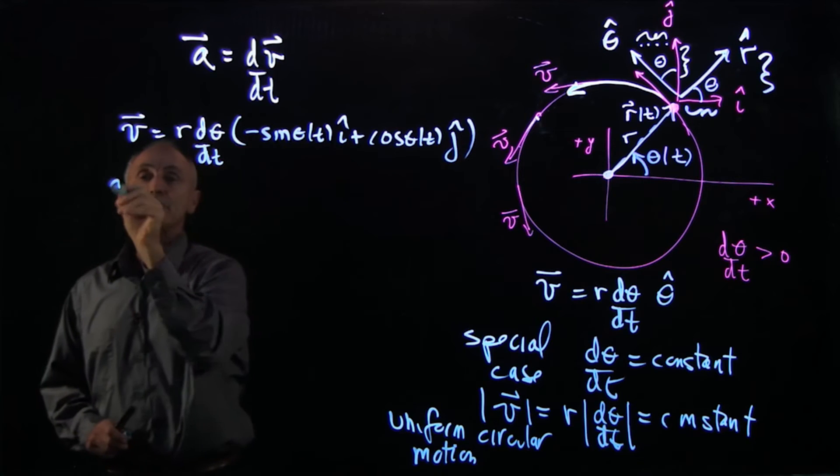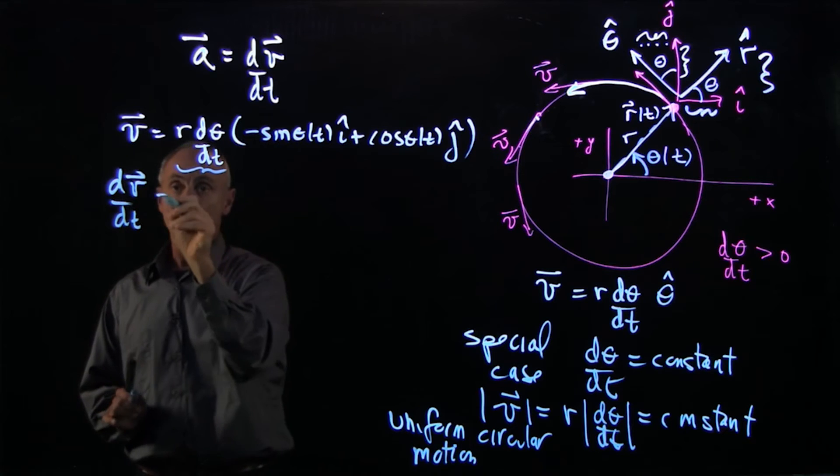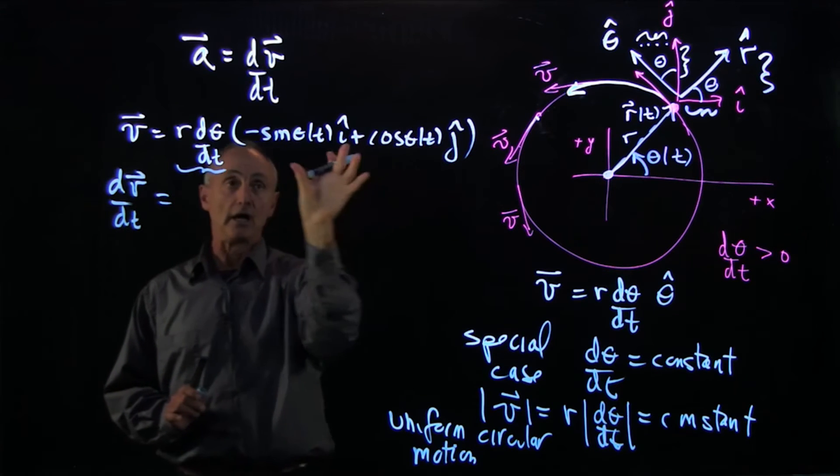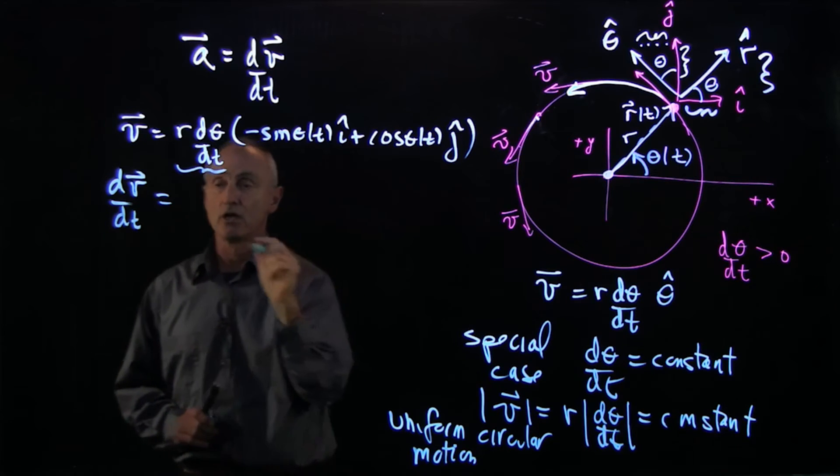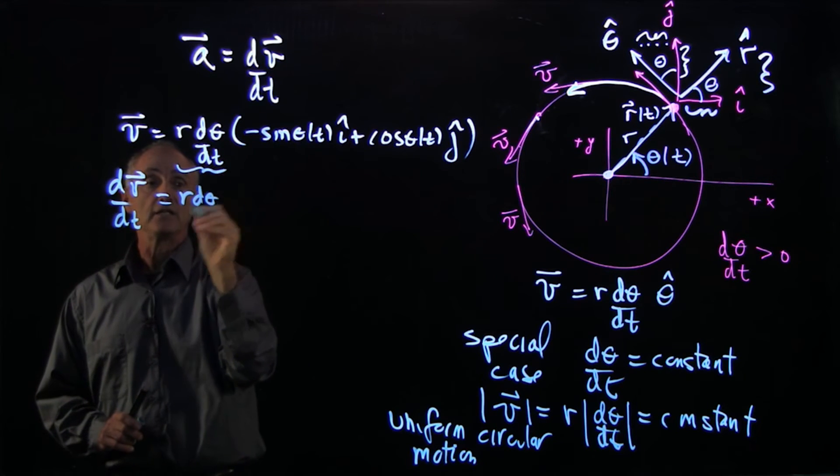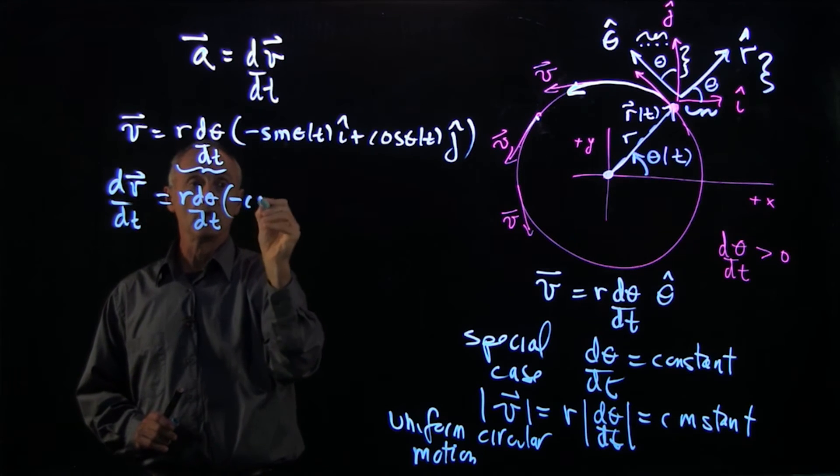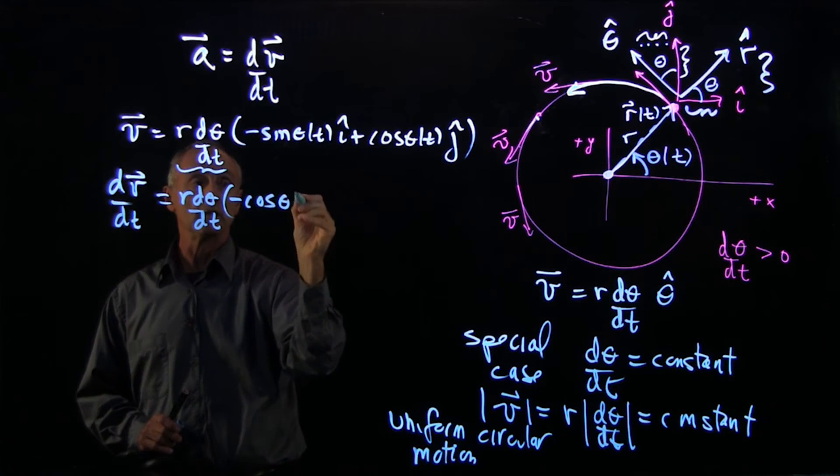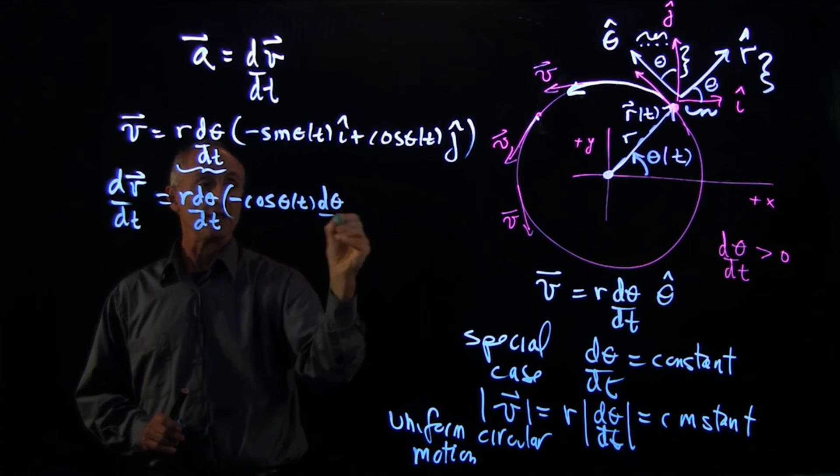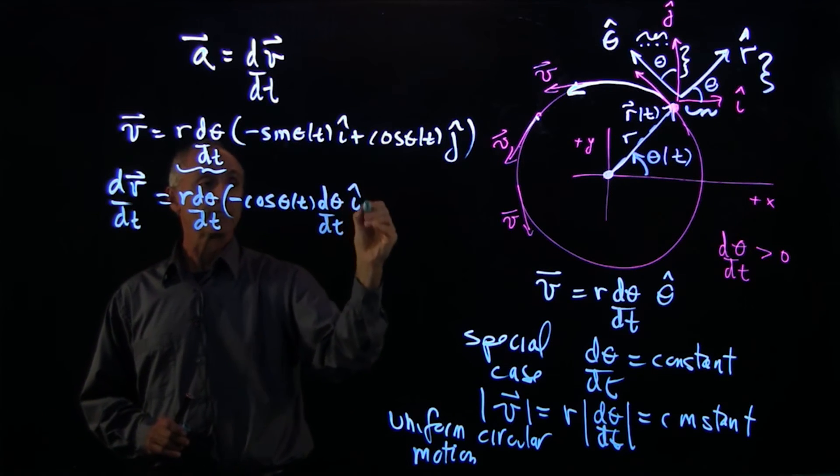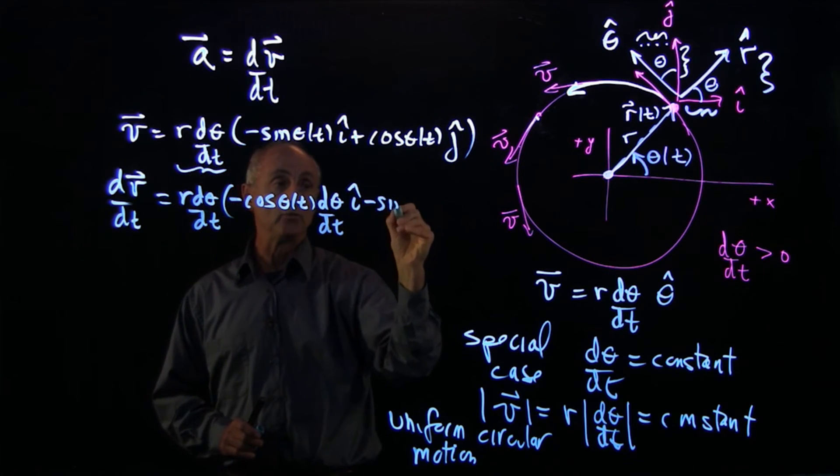So when I differentiate the velocity in time, this piece is constant. So I'm only, again, applying the chain rule to these two functions. So I have r d theta dt. And I differentiate sine, I get cosine with a minus sign. So I have minus cosine theta, I'll keep the function of t just so that you can see that, d theta dt i hat. Over here, the derivative of cosine is minus sine d theta dt. That's the chain rule.